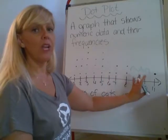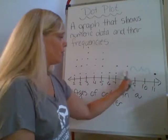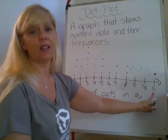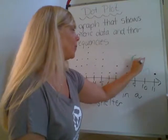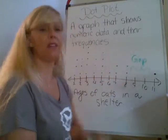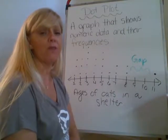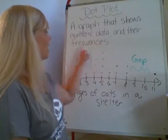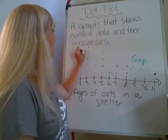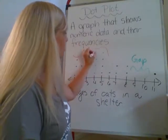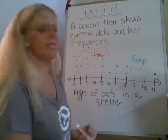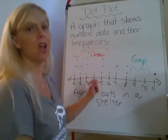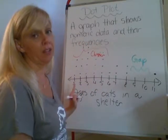Looking at this plot, I've bracketed off in green a hole in the data between years 8 and 11 — this is called a gap. There's no data between these two numbers. In contrast, over here where there is a lot of data grouped together, that is called a cluster. Most of the cats in this example are five years and younger.